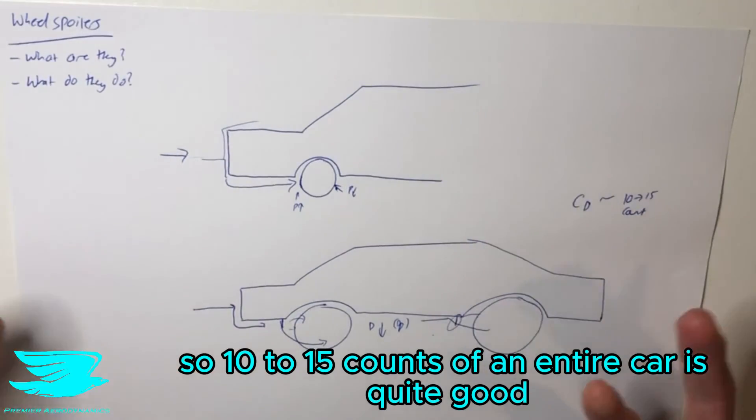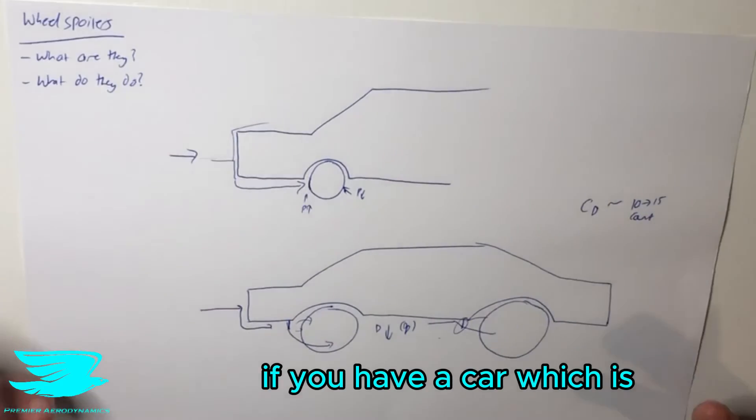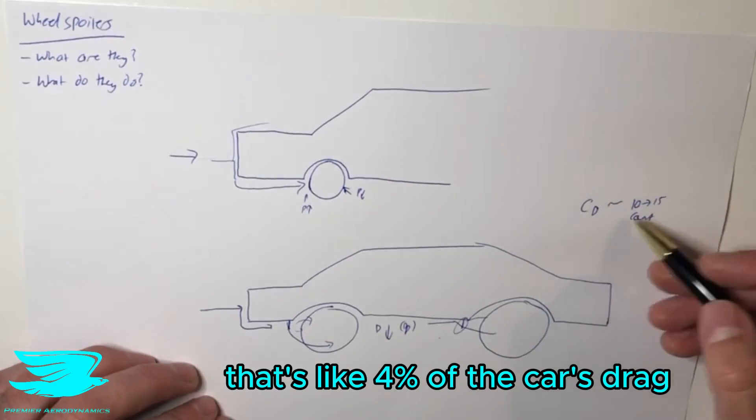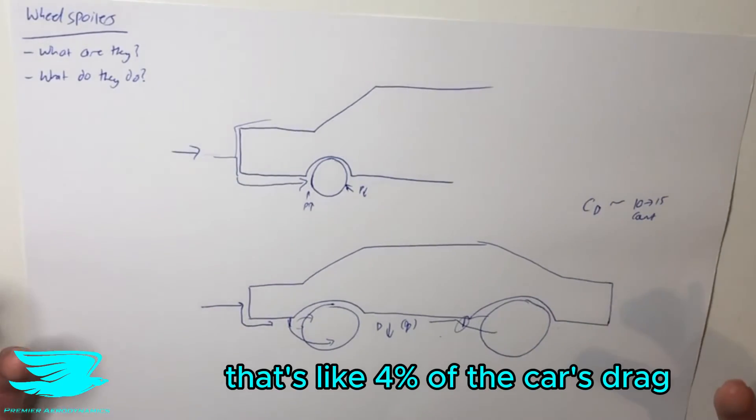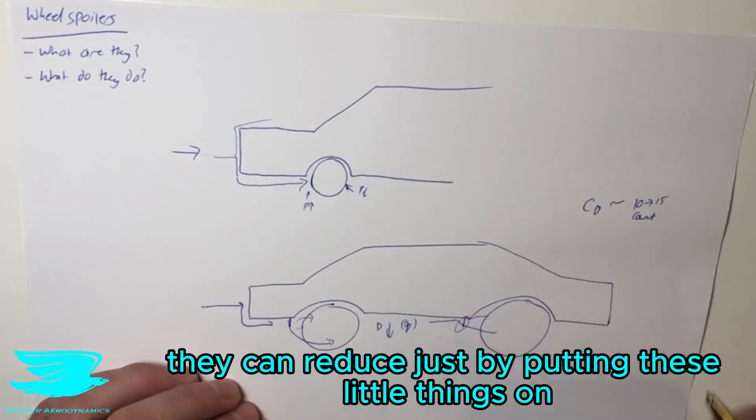10 to 15 counts of an entire car is quite good. If you have a car which is 250 counts, so 0.25, that's like 4% of the car's drag that you can reduce just by putting these little things on.